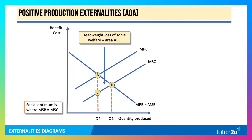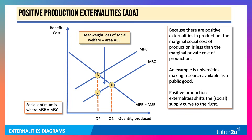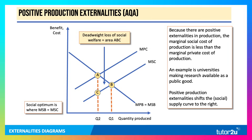And then positive production externalities — for AQA only. This is where the social cost curve lies below the private cost curve, because there are positive externalities in production. A good example is universities making research available as a free public good. Positive externalities shift the social supply curve, MSC, down to the right. The social optimum is therefore at Q1, but the private optimum is Q2, and therefore that leads to a deadweight loss of social welfare equal to the area A, B, C. You only need to study this if you're an AQA student.